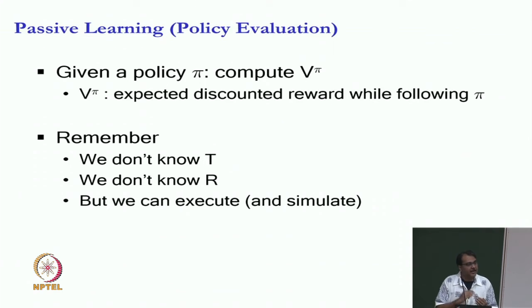So, with this background, let us get started on our first problem. The problem will be passive learning because we will build from passive to active. We will do policy evaluation pretty much like we did in the MDP lectures. So we are given a policy pi, we want to compute v pi, the same thing. And v pi is defined as the expected discounted reward while following pi starting in a given state.